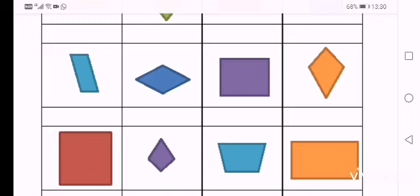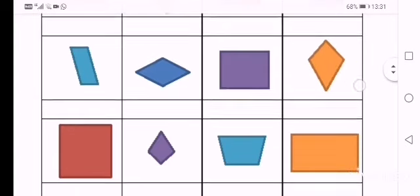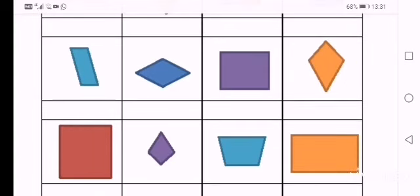Two pairs of sides. It's made up of two pairs of sides that meet that are equal in length. So you'll see the top two lines meet at the top and they are the same length and so goes for the bottom two lines that meet at the bottom. They are the same length.